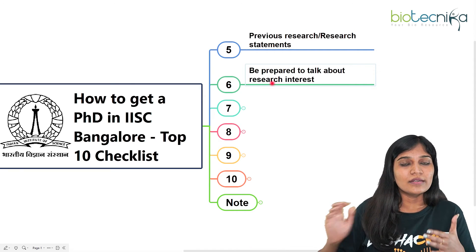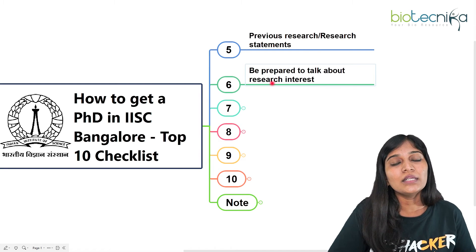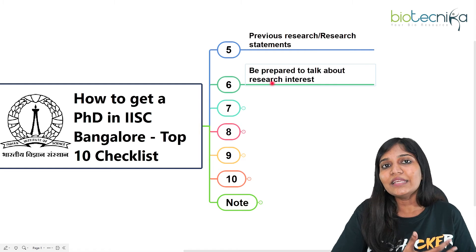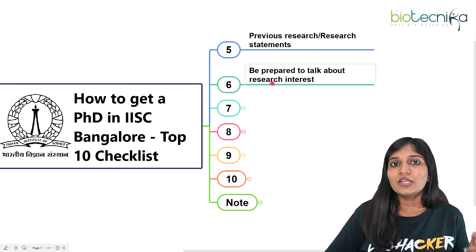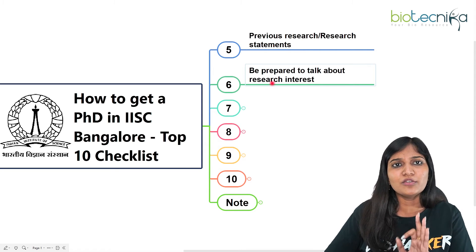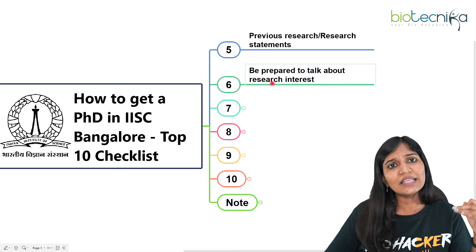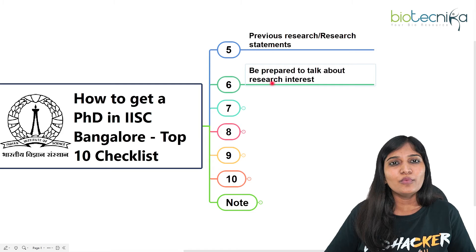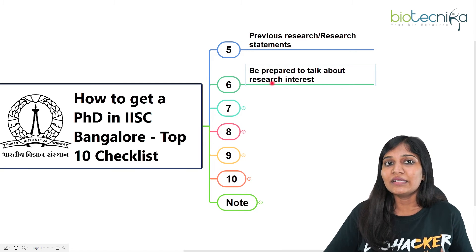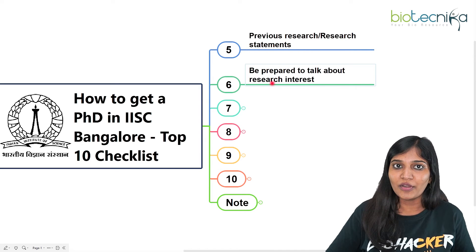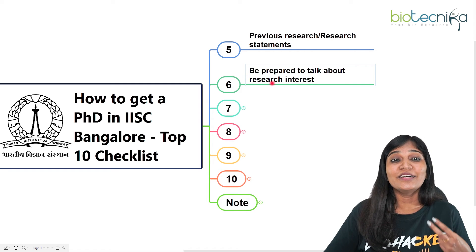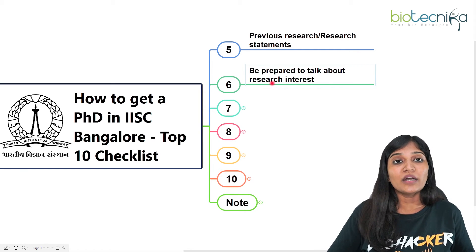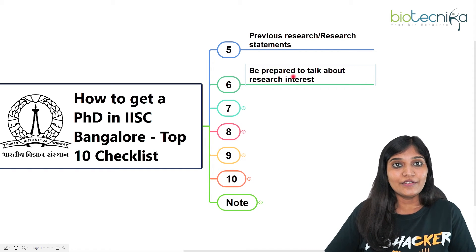Always be prepared to talk about your research interest. For MSc candidates applying for PhD, you can choose any three departments — such as Biochemistry, MCB, or Neurosciences — and attend interviews in all three on the same day. If selected in any department, you can join. Note that the Biochemistry department usually conducts two rounds of interviews due to high competition, so be prepared to clear both rounds.